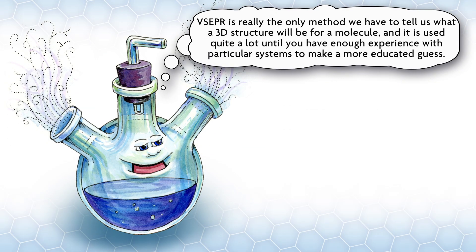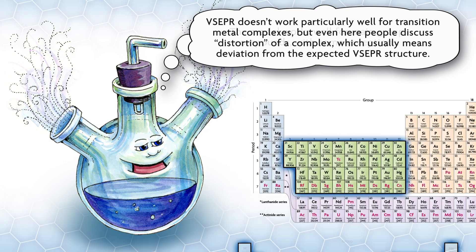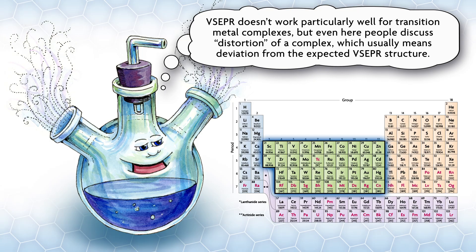VSEPR is really the only method we have to tell us what a 3D structure will be for a molecule and it is used quite a lot until you have enough experience with particular systems to make a more educated guess. The model works well for main group compounds with some exceptions. VSEPR doesn't work particularly well for transition metal complexes.